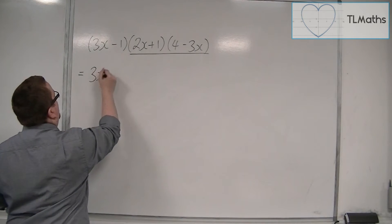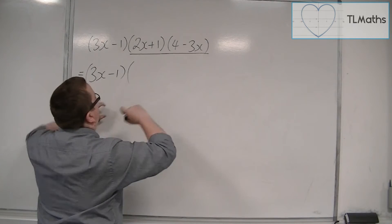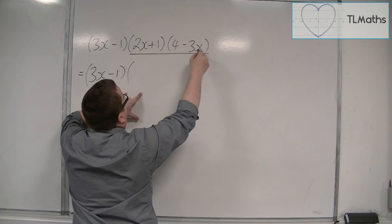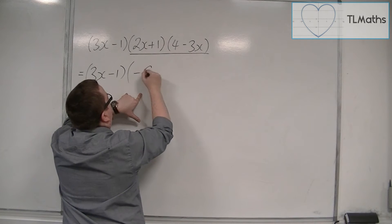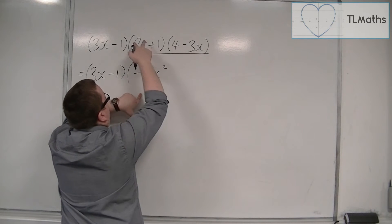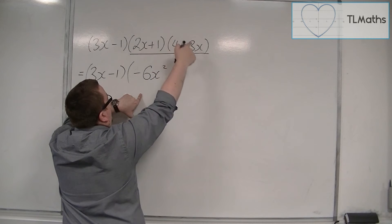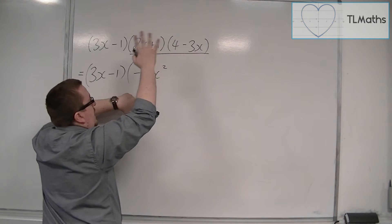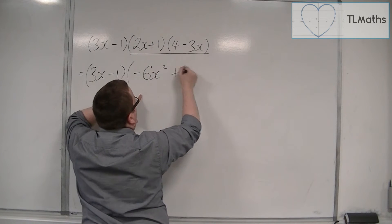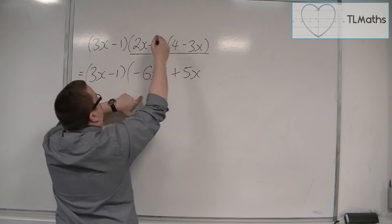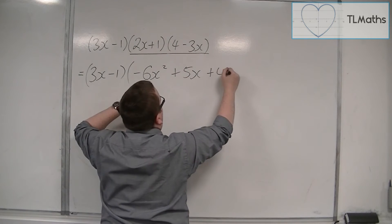So I'm going to leave this one alone. And then I'm going to have 2x times minus 3x, so minus 6x squared. I've got 2x times 4, that's 8x, and 1 times minus 3x, so that's minus 3x. 8 and minus 3, so 5x, and then I've got 1 times 4 left over.